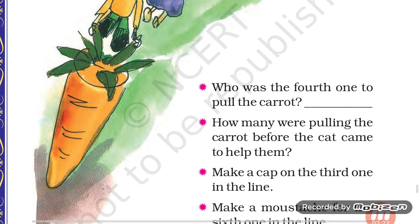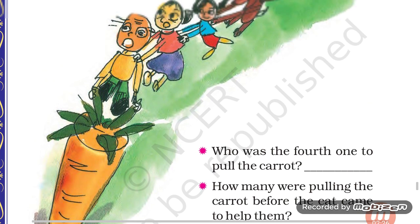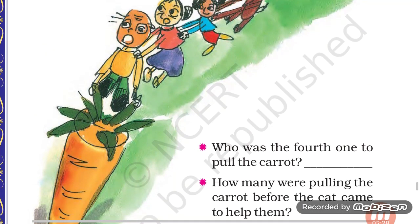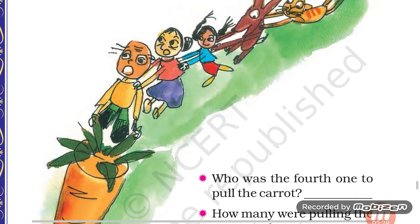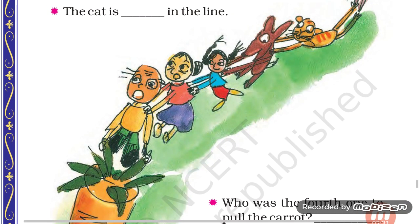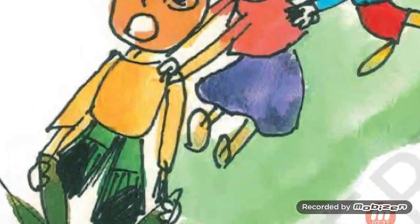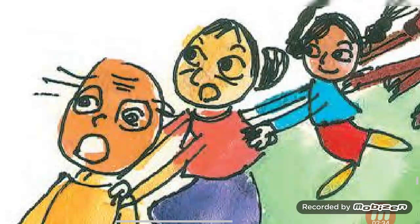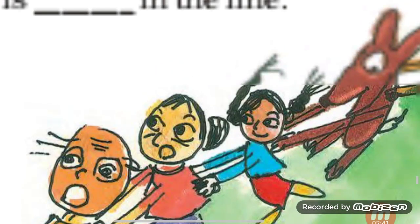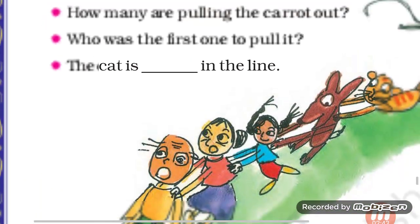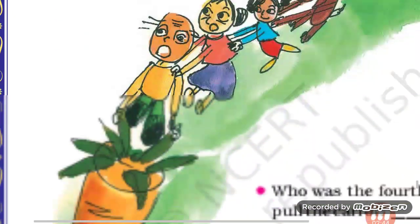Next question: Make a cap on the third one in the line. Third number pe jo hai uske sir pe aap ko eak cap banani hai. Let's see — first, second, third. Who is in the third position? This girl. Toh, this girl ke head pe you will draw a cap.